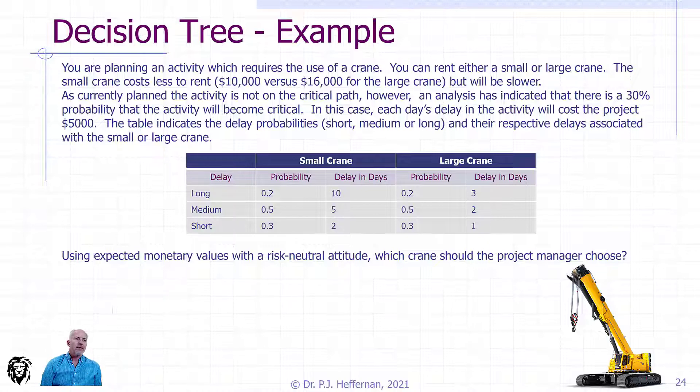The table indicates the delay probabilities - short, medium, or long - and their respective delays associated with whether you have the small or large crane, because one works slower and the other works faster. Because it's now starting to get sufficiently complicated that it's not obvious what the best choice is, we want to use our decision tree to determine the expected monetary values with a risk-neutral attitude and decide which crane we should book.